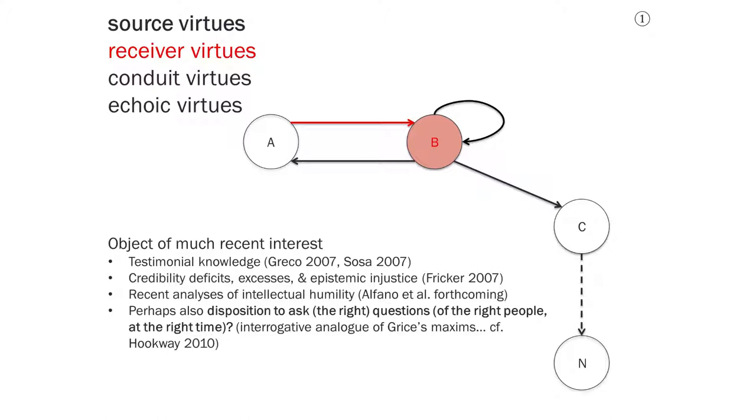Even more recently, there's been some work on the virtue of intellectual humility, which is an interesting disposition because, unlike many virtues, it's one where having it might be inconsistent with knowing that you have it. There's no problem with an honest person thinking that they're honest, and there's no problem with a courageous person thinking that they're courageous. But a person who goes around bragging about how humble they are probably isn't really humble. So this is an interesting virtue that I and some others have started to investigate recently, and it's easily thought of as a receiver virtue because if someone tells you something that you didn't know or if somebody tells you something that you disagree with, then humility is required in order to investigate their claims and take them seriously.